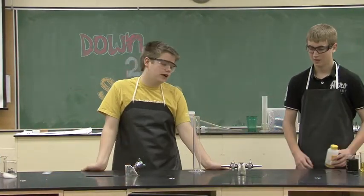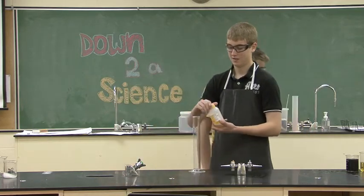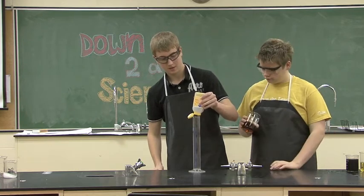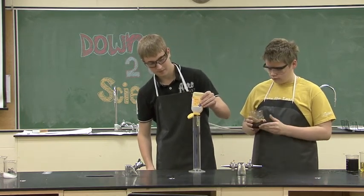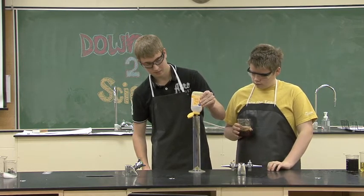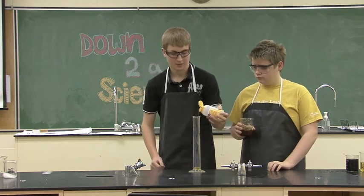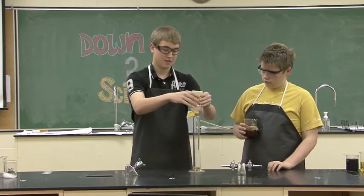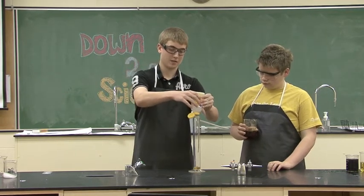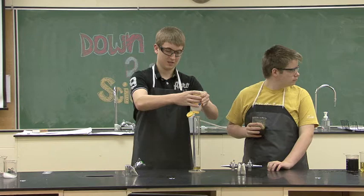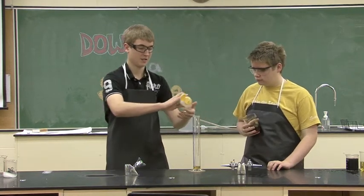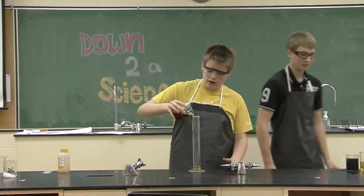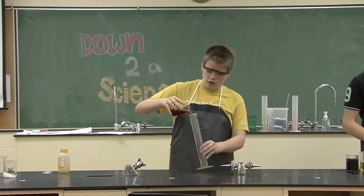So we'll show you a density tower. First, we have honey. Honey is very dense, and that's why it's on the bottom. Next, we have molasses. Molasses is second most dense to honey, so that's why it goes right on top of it.